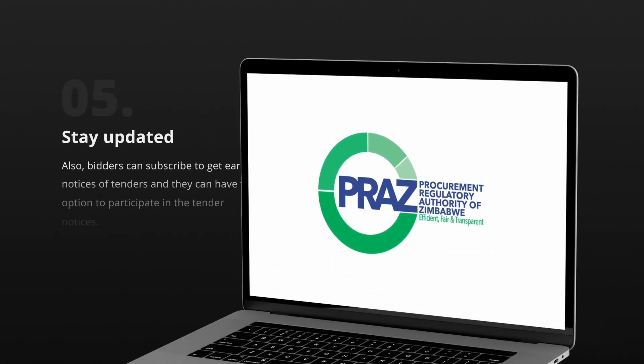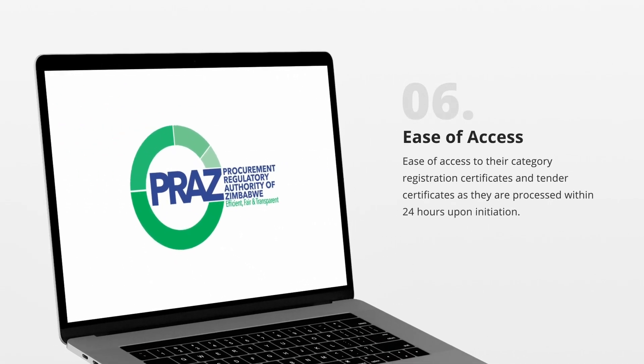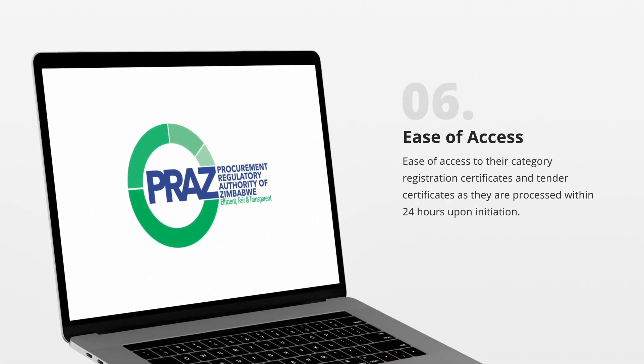Bidders can subscribe to get early notices of tenders and have the option to participate in tender notices. Bidders are also awarded through the portal and will get notified when they win, and are able to make their contract fee payments. Additionally, category registration certificates and tender certificates are easily accessible and processed within 24 hours upon initiation.